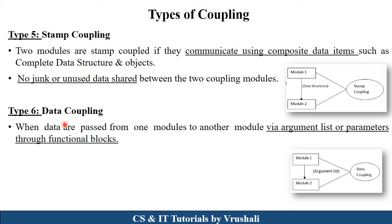The next type is data coupling. You are familiar with argument list parameters. In a particular program, you declare a function and pass parameters — for example, void addition with integer a and integer b as parameters. Whatever parameters are passed in module one, module two uses that parameter information. This is called data coupling.